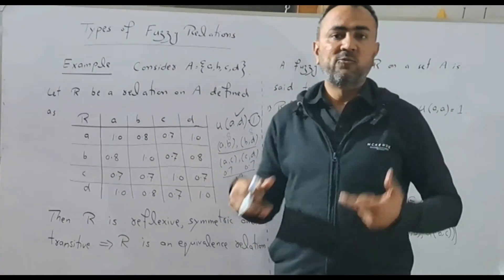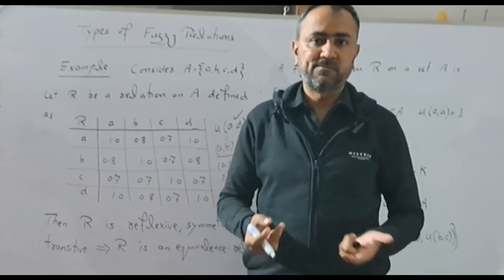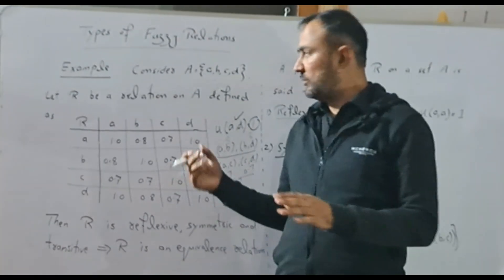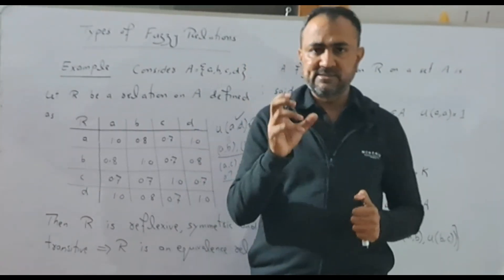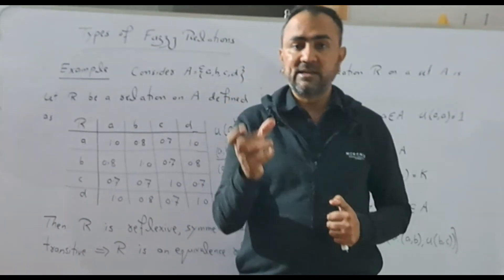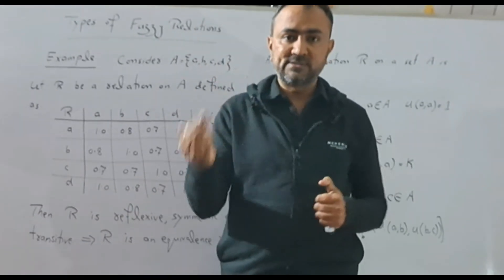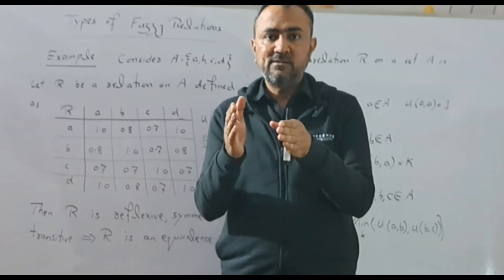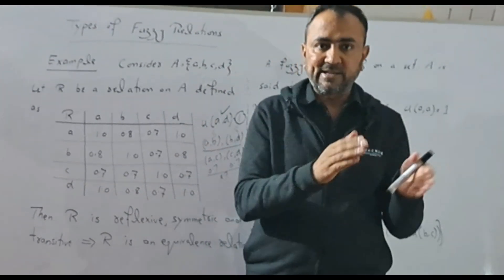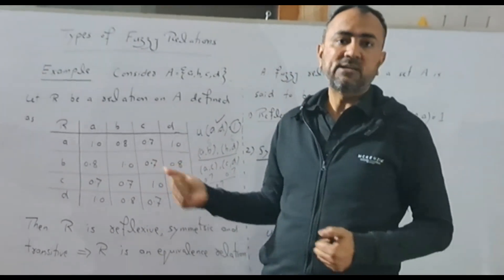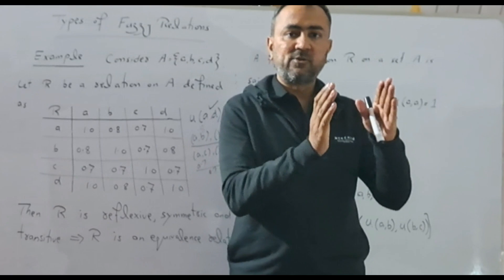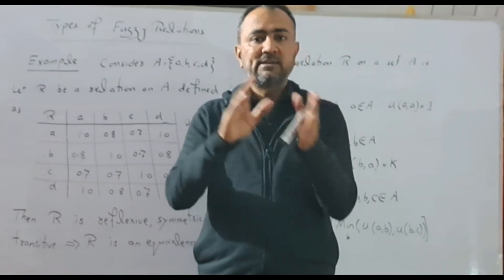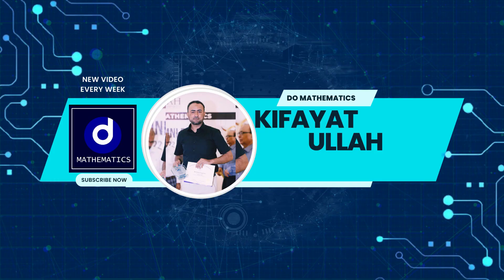Since the relation is reflexive, symmetric, and transitive, it is a fuzzy equivalence relation. With this example we conclude today's lecture, in which we studied types of fuzzy relations — reflexive, symmetric, and transitive — established the definition of fuzzy equivalence relation, studied an example, and compared types of fuzzy relations with types of crisp relations.